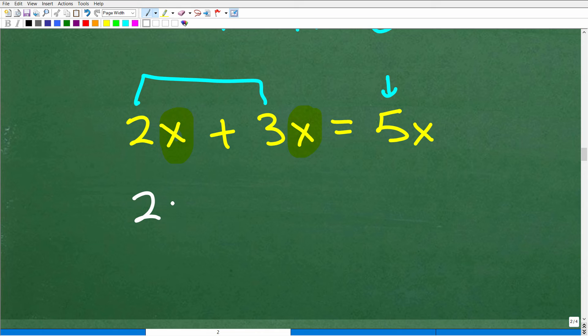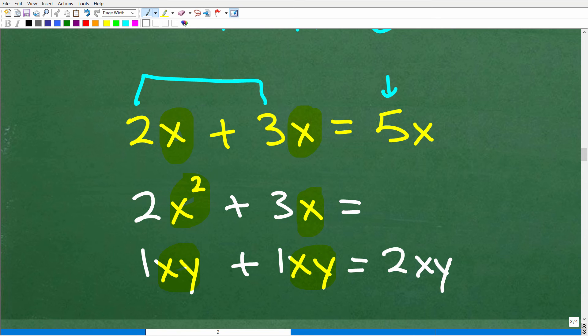Now, what if you had 2x squared plus 3x? Now, here, these are not like terms because these variable parts are different. Okay, they're very similar, but this one, this x squared, this is x. So you cannot combine these terms because they are not like. So here, for example, xy plus xy. This is 1xy plus another 1xy. These are like terms because these are exactly the same. So this is 2xy, okay?